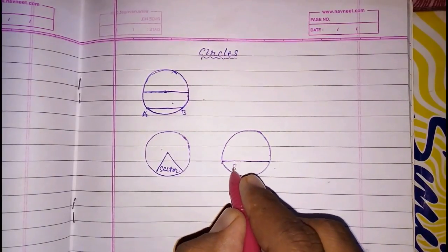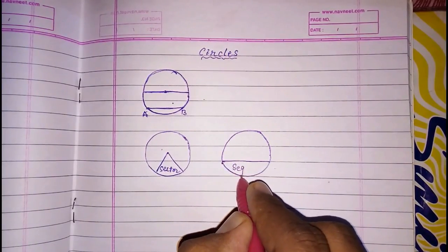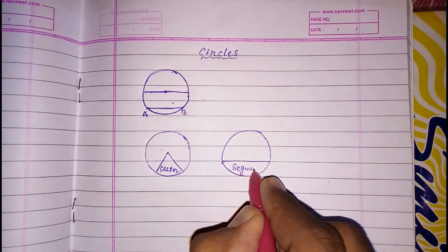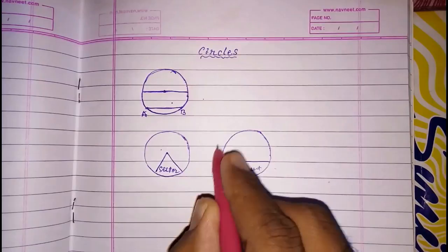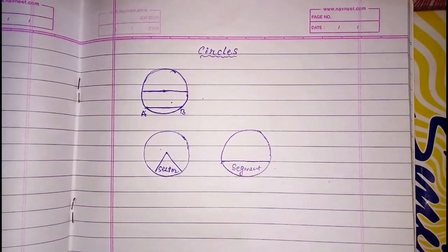When we break a biscuit — cutting along a chord rather than through the center — the smaller part is called the minor segment, and the remaining one is called the major segment.